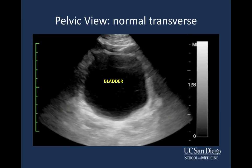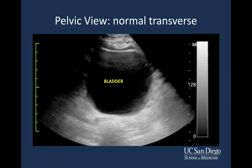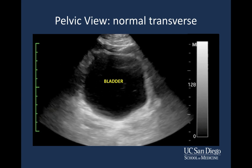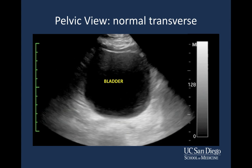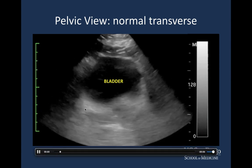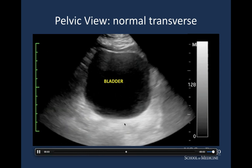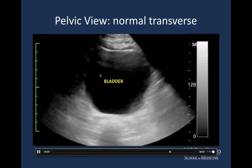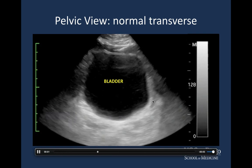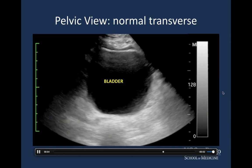Here's a video clip showing the bladder — it's anechoic, black, because urine is mostly water, and fluid is always black or anechoic on ultrasound. You can see posterior acoustic enhancement — enhanced echogenicity deep to a fluid-filled structure. We see fluid within the bladder but no free fluid outside of the bladder, which is exactly what we hope to find.